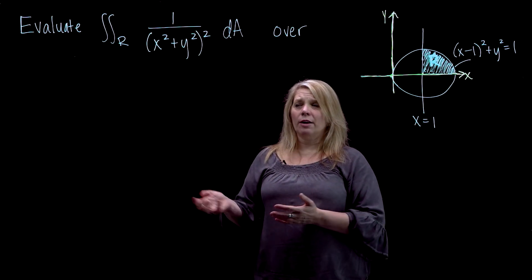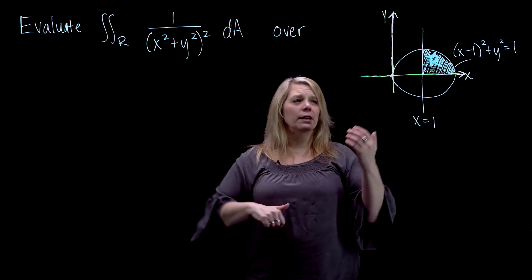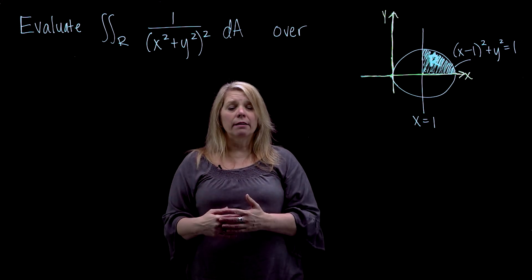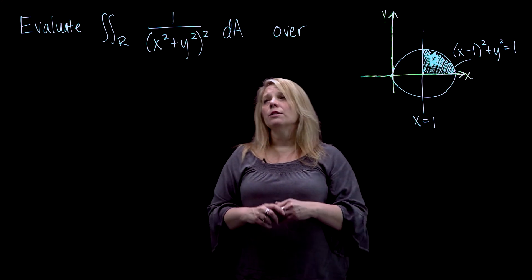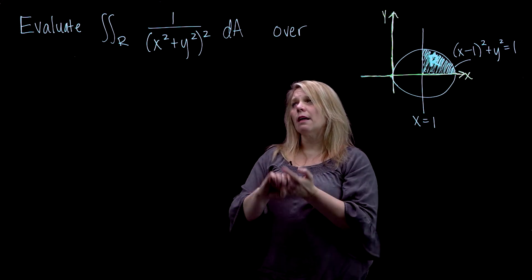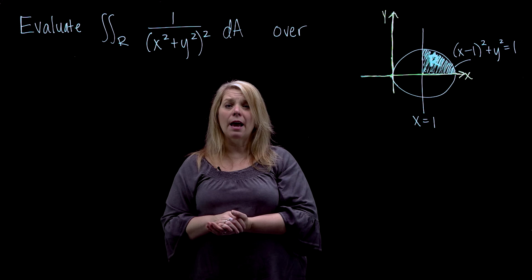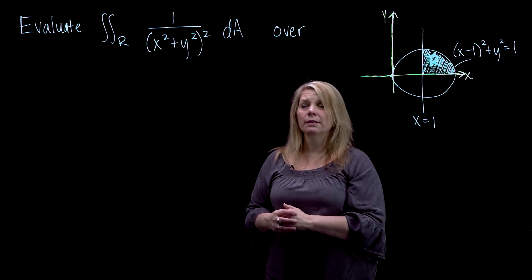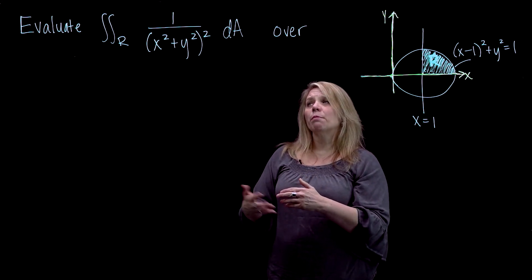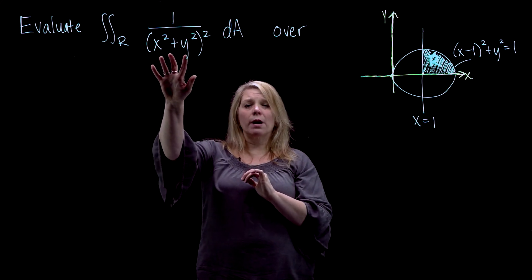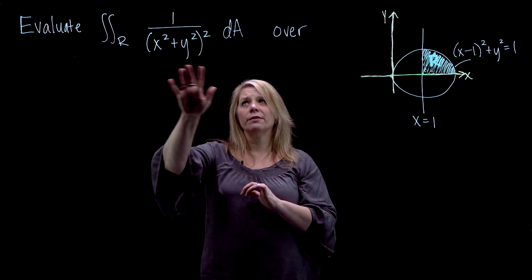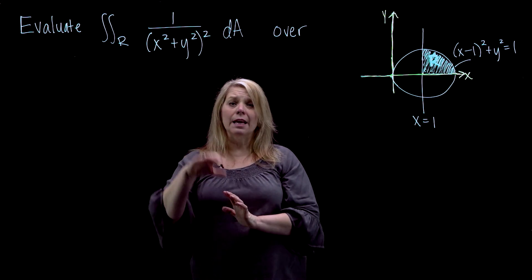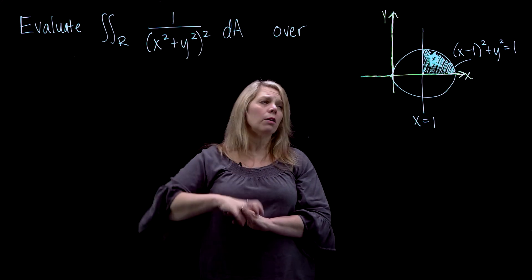We're going to look at another example of a double integral. We need to look at our function and our region and decide whether to do this with dx on the inner integral, dy on the inner integral, or maybe convert to polar coordinates. The function is very difficult to integrate with respect to x or y — it would require trig substitution. But if you convert to polar coordinates, you can use x squared plus y squared equals r squared, and this denominator simplifies very nicely. You get an extra r in your dA, but you end up with a pretty straightforward function to integrate.